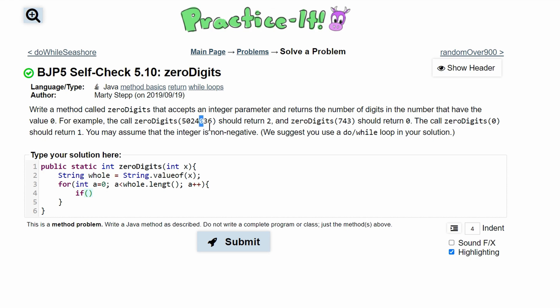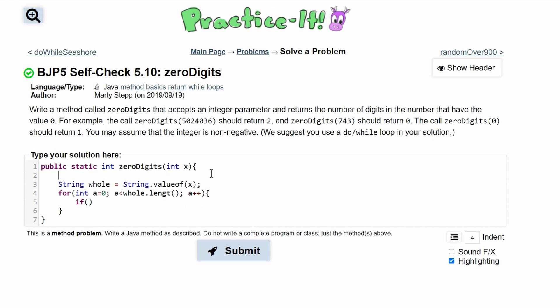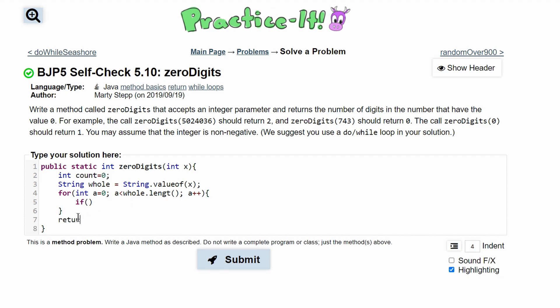We're going to have an if statement. Since we are counting how many zeros we have, we actually need a counter variable, so we'll do int count, initialize this to zero. Then later after we break out of our for loop, we're going to return count.